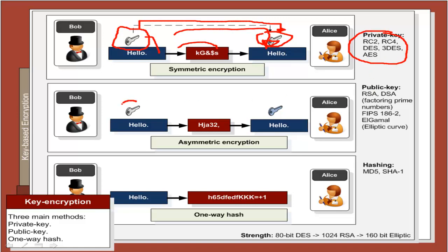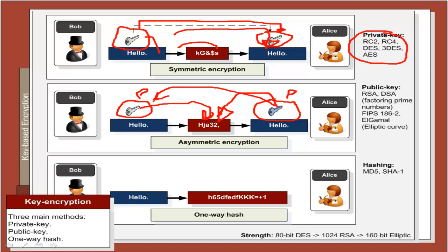Public key encryption uses two different keys. Bob can encrypt with one key, and only the other special key can decrypt it — this is known as a private key and a public key. If Bob wants to communicate with Alice, he gets Alice's public key, encrypts with it, and only Alice's private key can decrypt it. Typical techniques include RSA and DSA.